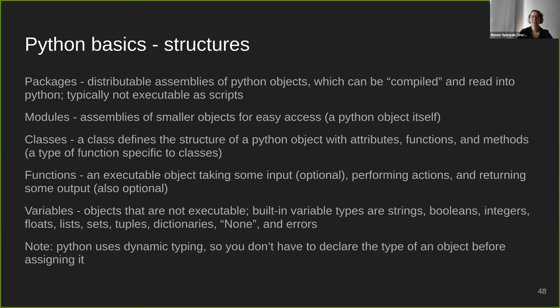Python uses dynamic typing, also known as duck typing — you don't have to declare the type of an object before using it. You assign it to a variable, and Python looks at it and says: does this look like a duck, quack like a duck? If it does, it's probably a duck. That's where the phrase duck typing comes from. It basically just checks whether the thing looks like a given type of variable. Python is also developed by a huge community; there are hundreds of freely available packages.